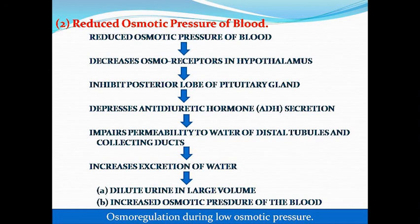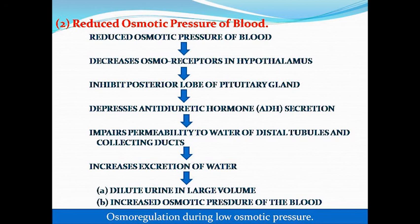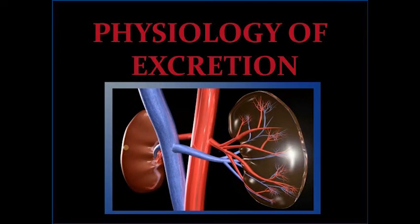In the second situation, when blood osmotic pressure decreases, the osmoreceptors in the hypothalamus decrease their activity, inhibiting the posterior lobe of the pituitary gland. ADH secretion decreases, which reduces water permeability in the distal tubule and collecting duct. Less water is absorbed, so more water is excreted — producing dilute urine with increased volume — and blood osmotic pressure rises back to normal. This is all about the physiology of excretion, in which we have completed all the topics today. Thank you.